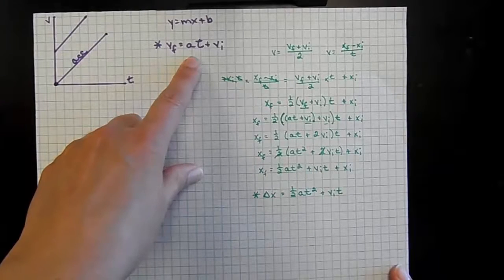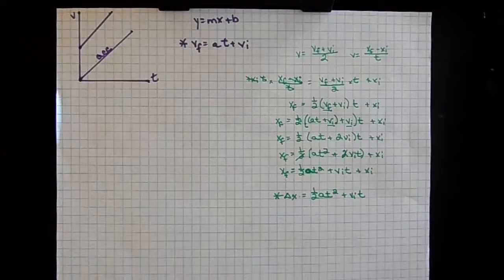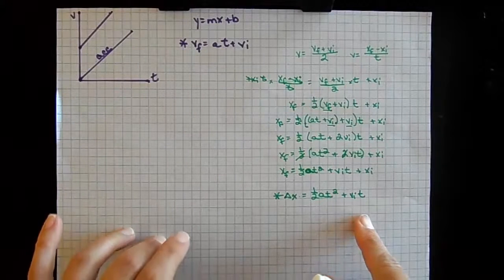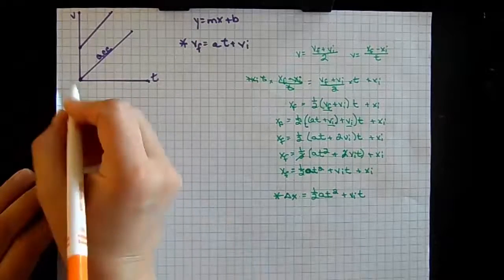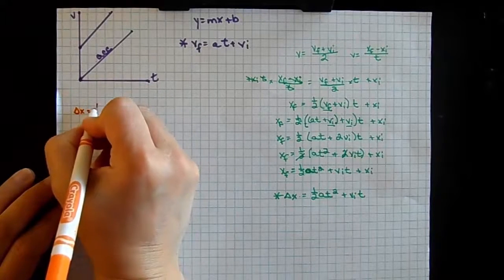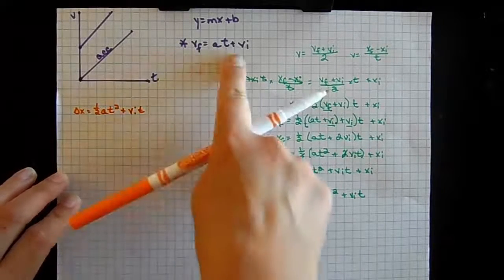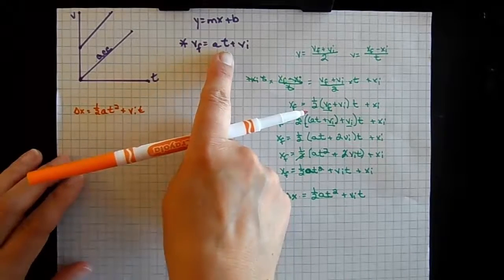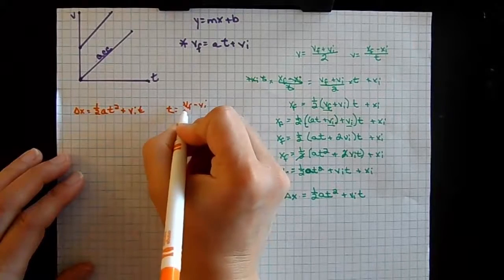So we have our first equation from the graph, and our second equation derived from it. The problem with both expressions is they include time, and sometimes we don't know time. So our next goal is to derive an equation that doesn't include time. We have Δx = ½·a·t² + Vi·t and Vf = a·t + Vi. If we take the second equation and solve for time: t = (Vf − Vi) / a.